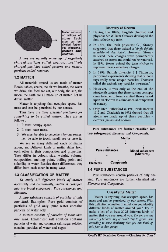Only later - Rutherford in 1911, Niels Bohr in 1912, and Chadwick in 1932 - showed that all atoms are made up of three particles: electrons, protons, and neutrons. Pure substances are further classified into two subgroups: elements and compounds.